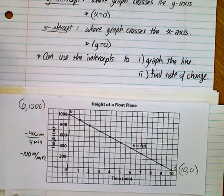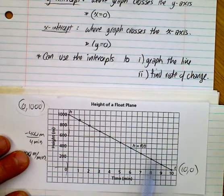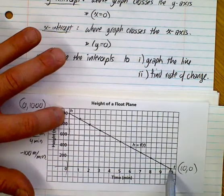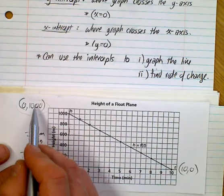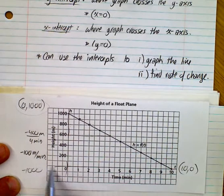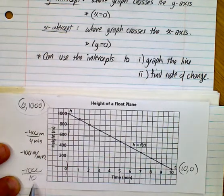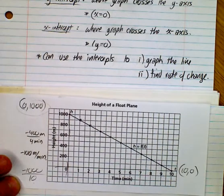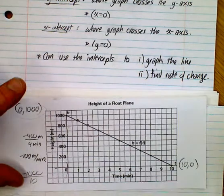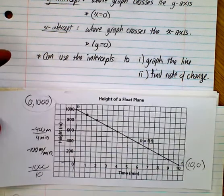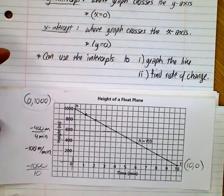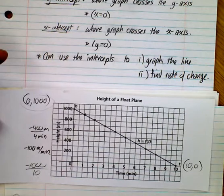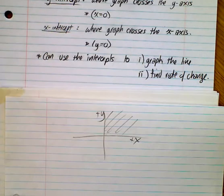We can use the intercepts to find a couple different things. We can use them to graph the line — just plot the two points and connect the dots between them. You can also find the rate of change: it went down 1,000 in 10 minutes, so that works out to be negative 100 meters per minute as well. So this is how we're interpreting linear functions — we're looking at the intercepts, the rate of change, where they start and where they end.